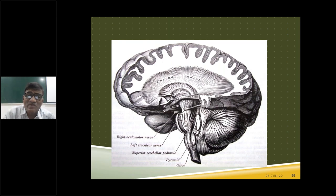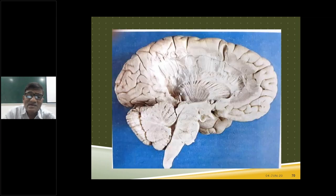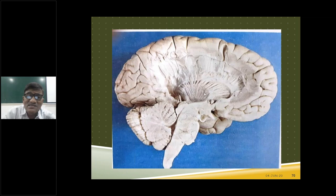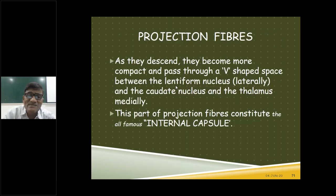The internal capsule is best appreciated in cross-section. It is sandwiched between the lentiform nucleus laterally, and the caudate nucleus and thalamus medially. A dissection from the lateral aspect — with the insula and lentiform nucleus removed — allows us to see the internal capsule. From the medial aspect, removing the thalamus and caudate nucleus reveals the internal capsule from inside. So the corona radiata above becomes the internal capsule as it descends.